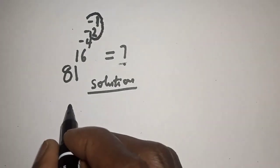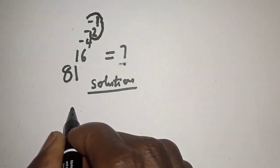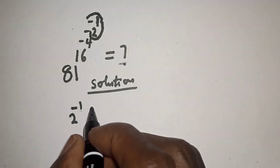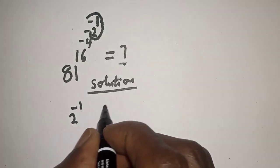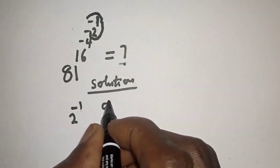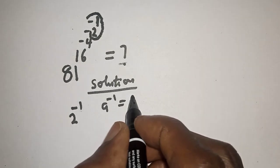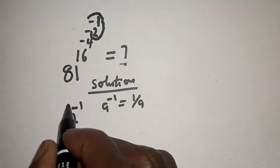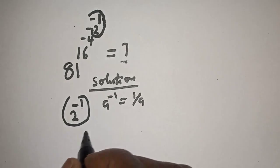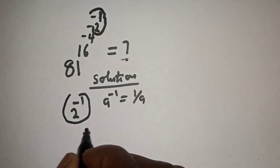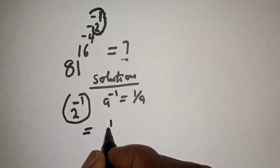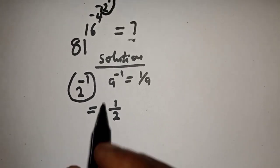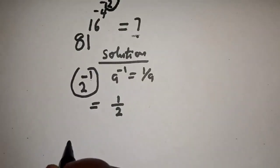Take note that if you have a raised to power minus 1, this is equal to 1 over a. Therefore 2 raised to power minus 1 is equal to 1 over 2. Now let's substitute.